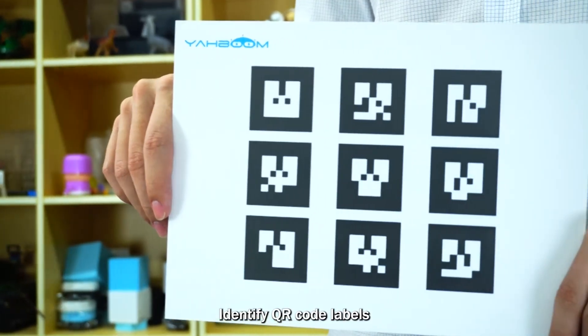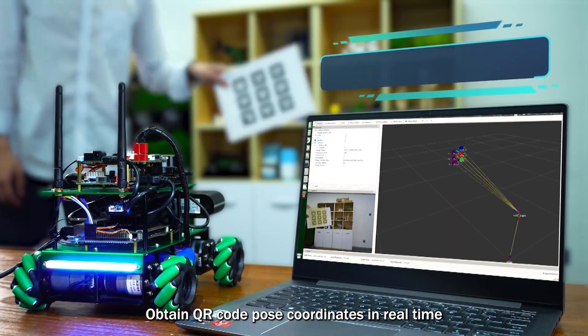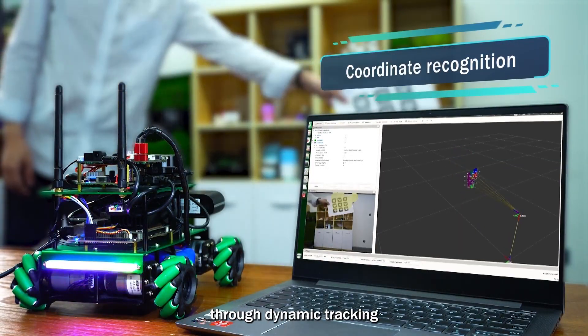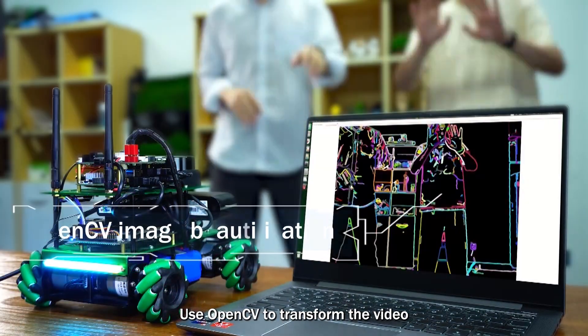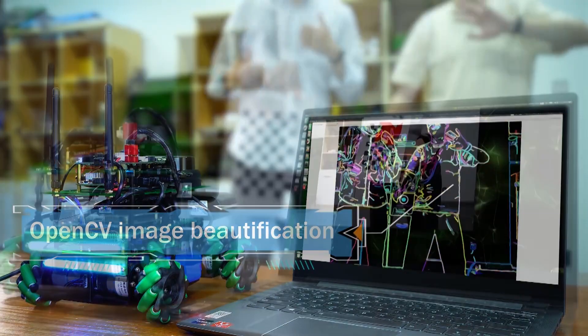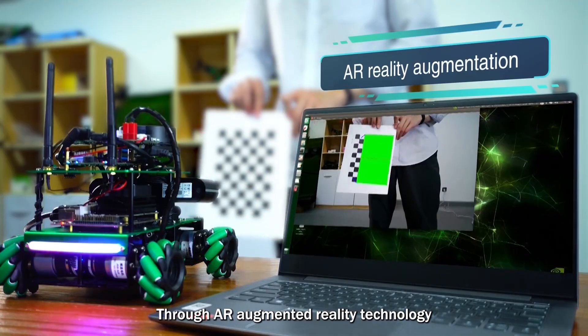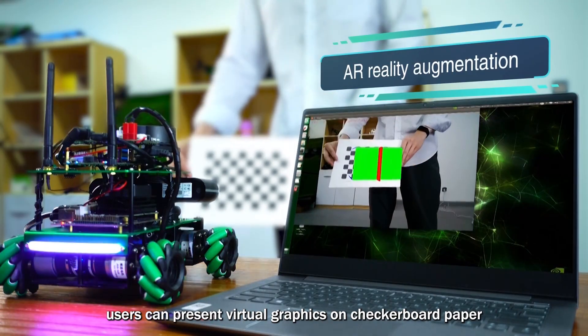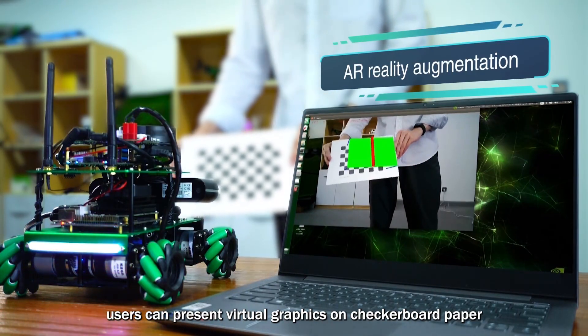Identify QR code labels and obtain QR code pose coordinates in real time through dynamic tracking. Use OpenCV to transform the video image to achieve beautification effects. Through AR augmented reality technology, users can present virtual graphics on checkerboard paper.